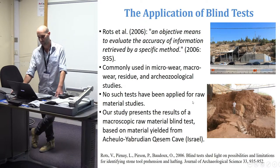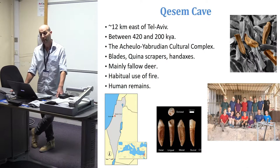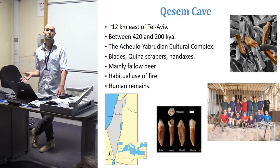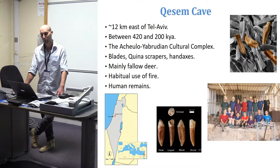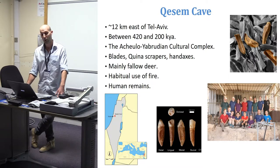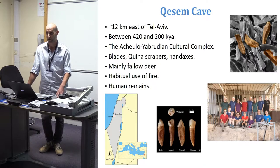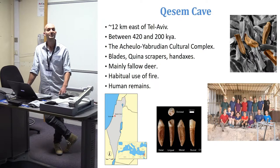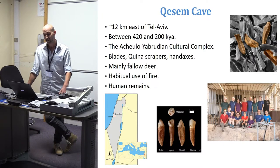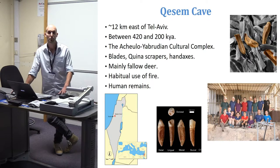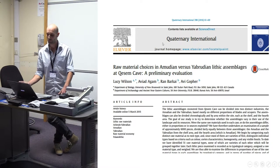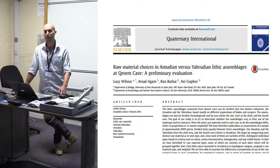Our current study presents the results of a macroscopic raw material blind test based on the archaeological material from the Acheulo-Yabrudian site of Kesem Cave in Israel. Kesem Cave is located 12 kilometers east of Tel Aviv, dated to between 420 and 200 thousand years ago, meaning it was occupied with breaks for over 200 thousand years. It is assigned to the Acheulo-Yabrudian cultural complex, a local entity in the Levant assigned to the final stage of the Lower Paleolithic. The lithic assemblages are characterized by the production of blades, Quina scrapers, and handaxes. The assemblages are strongly dominated by fallow deer, sometimes up to 80 percent. The site also yielded one of the earliest evidences of habitual and controlled use of fire, and 14 human teeth, though these could not be assigned to a specific human type.